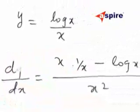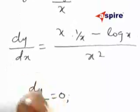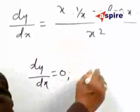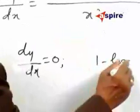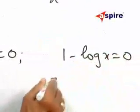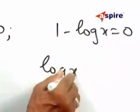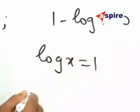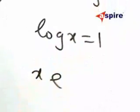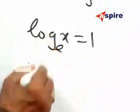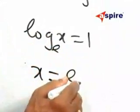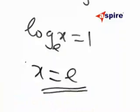Therefore, setting dy/dx equal to 0, we find for what values this happens. This gives 1 minus log x equals 0, or log x equals 1, or x equals e because it is base e. Therefore x equals e.